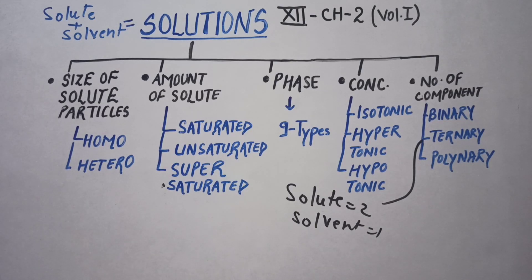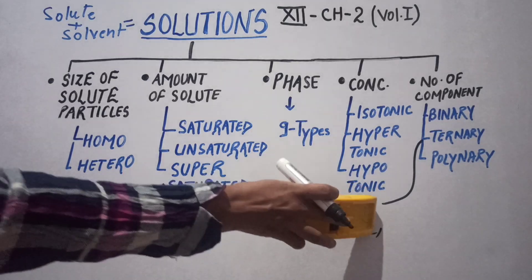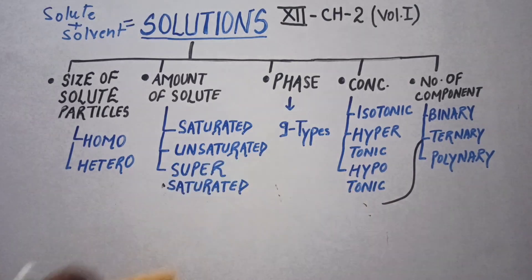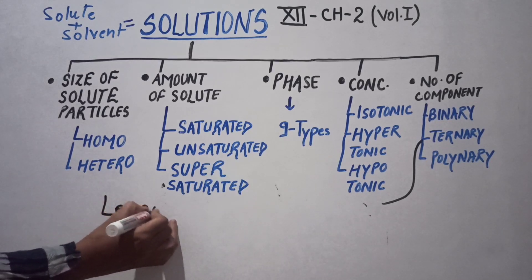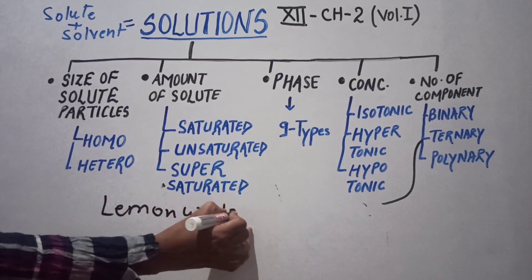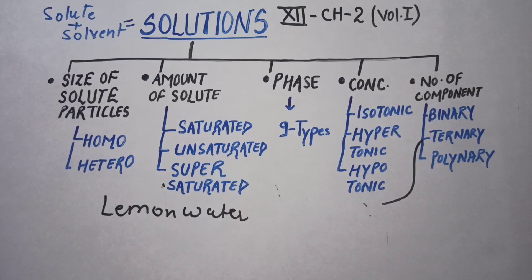Polynary means one solvent but many solutes — for example, lemon water (shikanji). So this completes the classification of solutions based on your previous classes' knowledge.